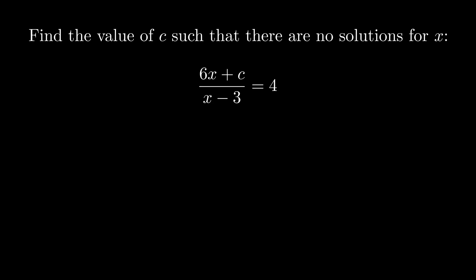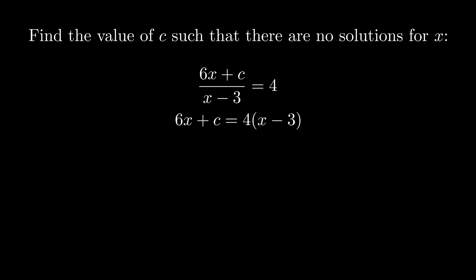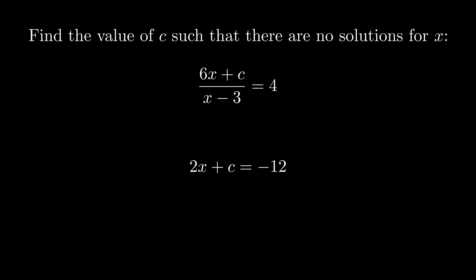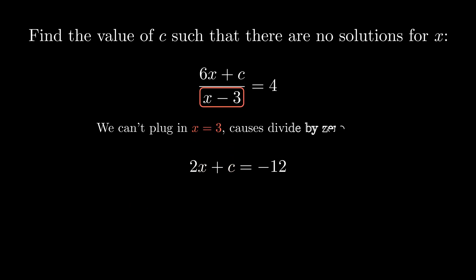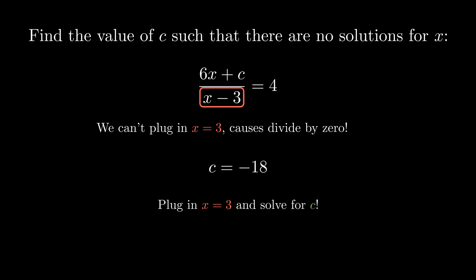One more example problem — pause if you want to try it. If you don't know where to begin, you could start by multiplying out that denominator. We can now subtract 4x on both sides. It looks like no matter what value we pick for c, we will always be able to solve for x. How can we pick any c value that would give us no solutions for x? Notice that in the first equation, plugging in x equals 3 results in a division by 0, which will not be able to give us a solution no matter what. Therefore, we want to find the value of c in the second equation that gives us x equals 3. Plug in x equals 3, solve for c, and we have our answer.